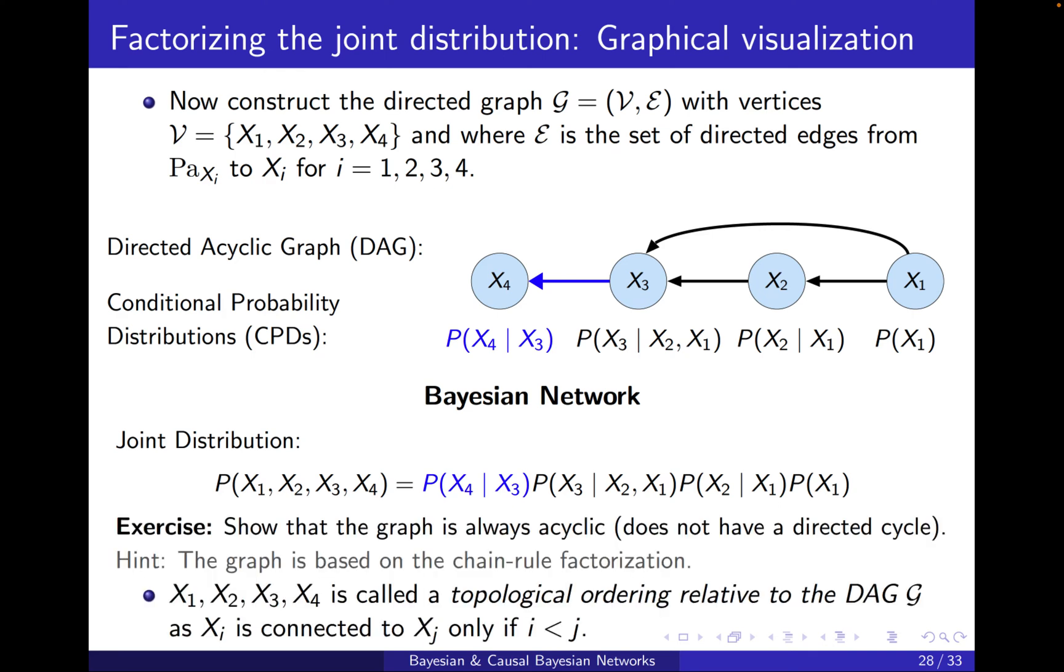A little exercise here to show that the graph is always acyclic. You can use the fact that the graph is based on the chain rule factorization. If we obtain this graph from the chain rule and then we simplify the CPDs, then we always end up with an acyclic graph.